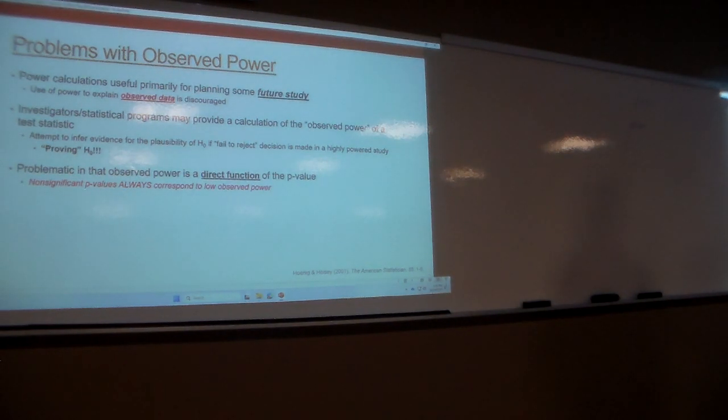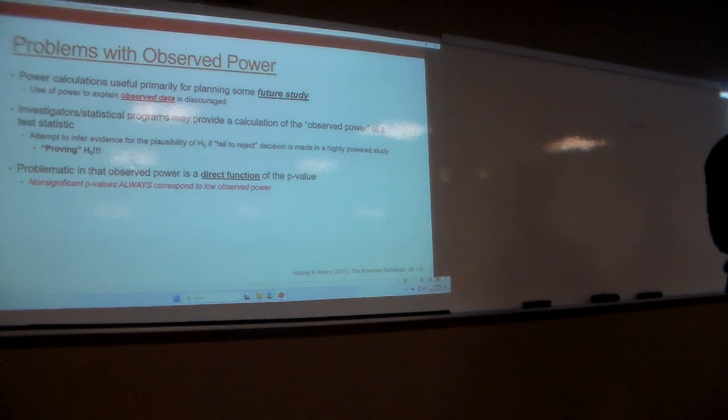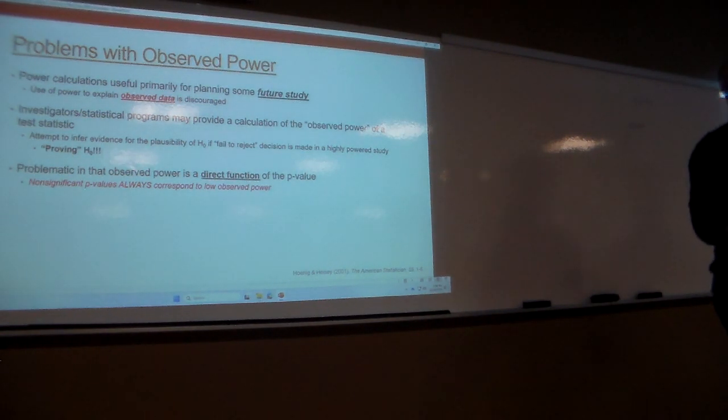If I get a p-value that is above 0.05, or something where I fail to reject, it's always going to correspond to low power. There's not a situation, because my observed power is a direct function of my p-value, there's no situation in which I could get a very large p-value. I get a p-value 0.5, where it's going to tell me my observed power was really high, because they're directly related to one another, so it just can't happen. So this idea of wanting to go through and look at my observed power, my observed power is really high but I still fail to reject, so that means the null hypothesis is true. You can't do that, because if my p-value is really high, it's always going to tell me I'm underpowered, always. By definition, mathematically, it will.